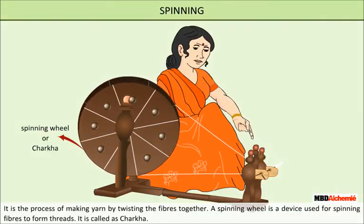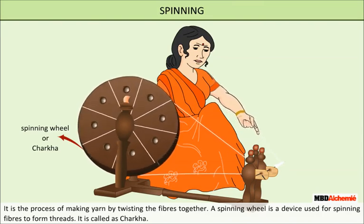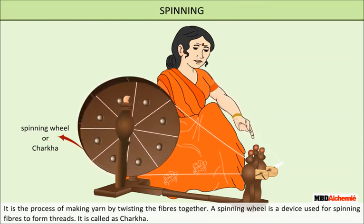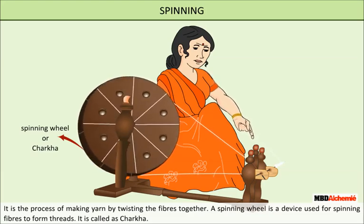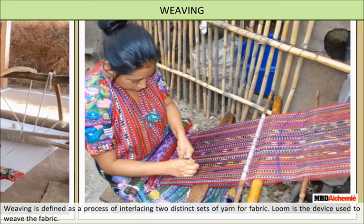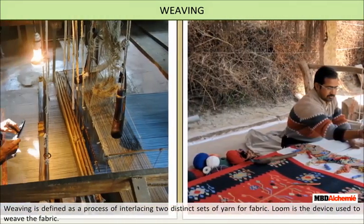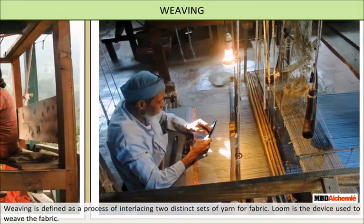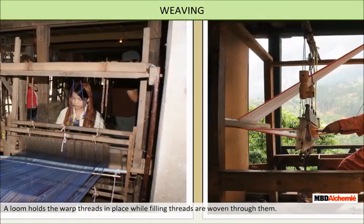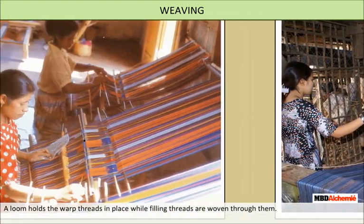Spinning is the process of making yarn by twisting fibers together. A spinning wheel — called a charkha — is the device used for spinning fibers to form threads. Weaving is defined as the process of interlacing two distinct sets of yarn to form fabric. A loom is the device used to weave fabric; it holds the warp threads in place while filling threads are woven through them.